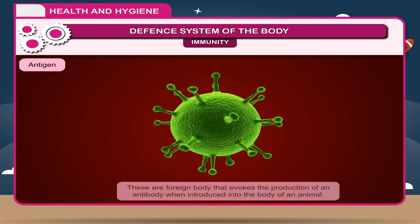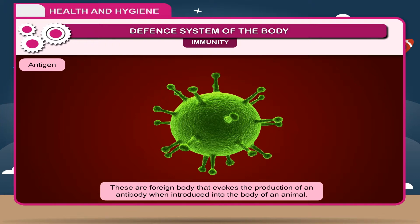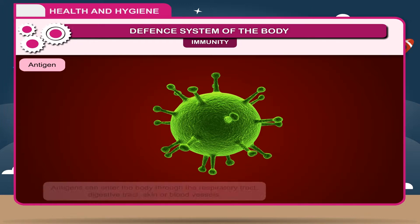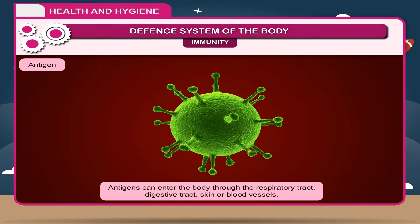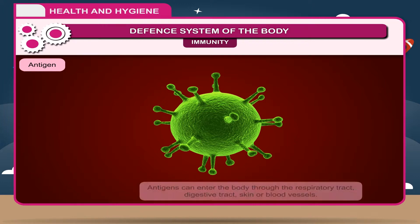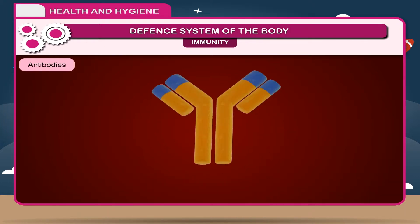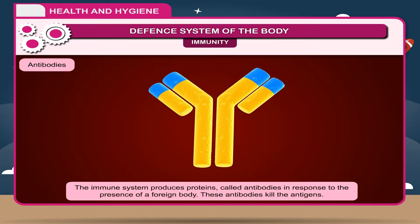Antigens are foreign bodies that evoke the production of an antibody when introduced into the body. Antigens can enter the body through the respiratory tract, digestive tract, skin, or blood vessels. Antibodies — the immune system produces proteins called antibodies in response to the presence of a foreign body, and these antibodies kill the antigens.